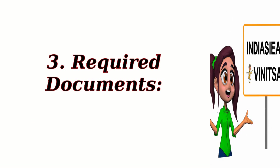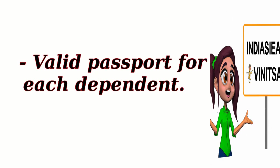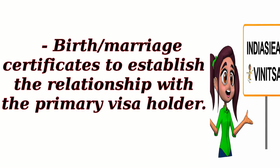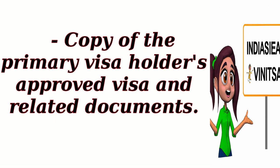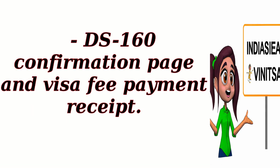Required Documents include: a valid passport for each dependent; birth or marriage certificates to establish the relationship with the primary visa holder; proof of financial support such as bank statements, employment letters, or tax documents; a copy of the primary visa holder's approved visa and related documents; and the DS-160 confirmation page and visa fee payment receipt.